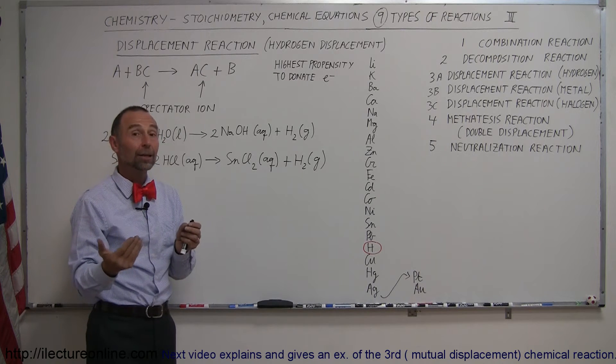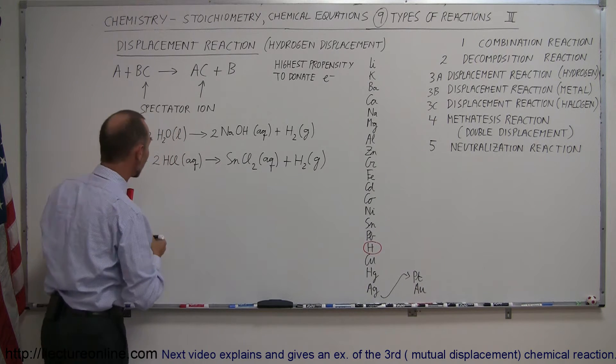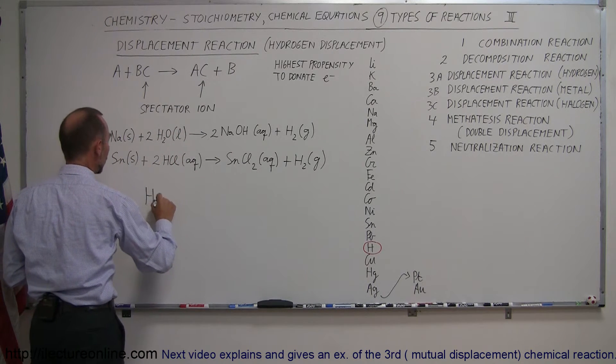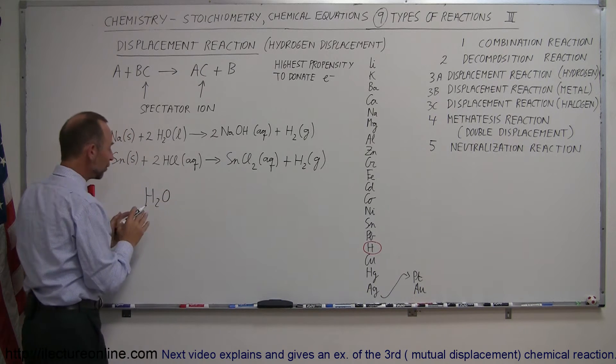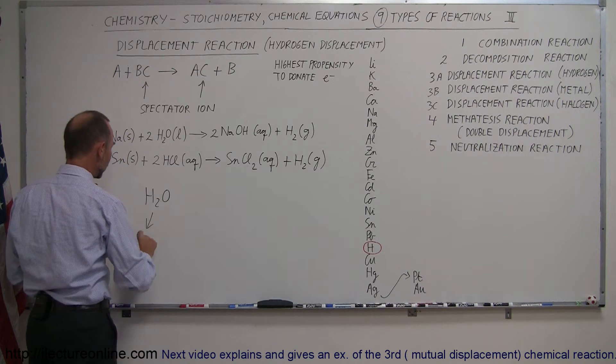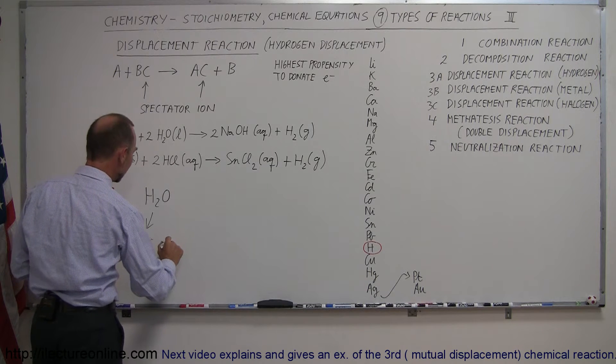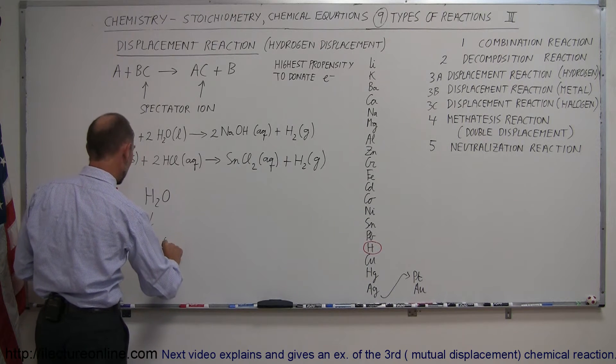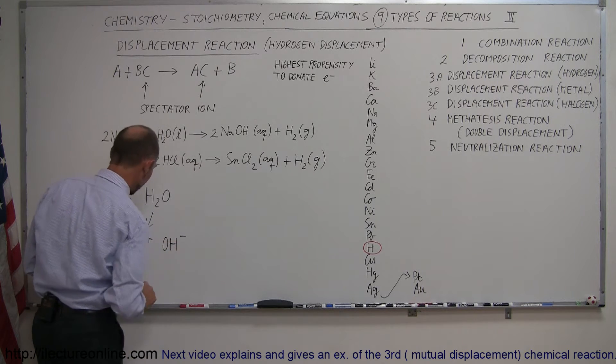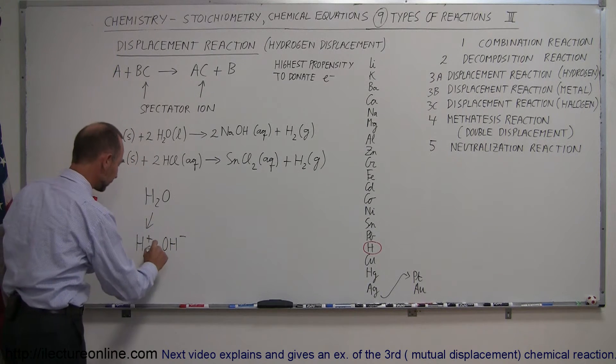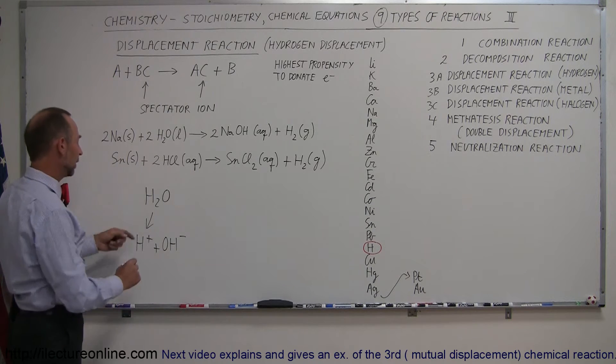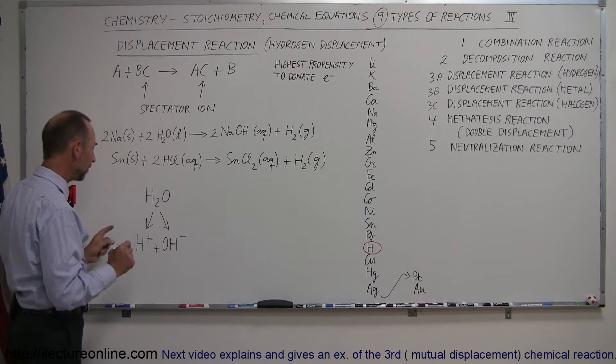So what happens then when the element donates an electron? Well, if you take a look at water, H2O, if you can dissociate the water, then that will dissociate into the hydrogen ion and the OH ion, the hydroxide ion. That's what I was looking for.